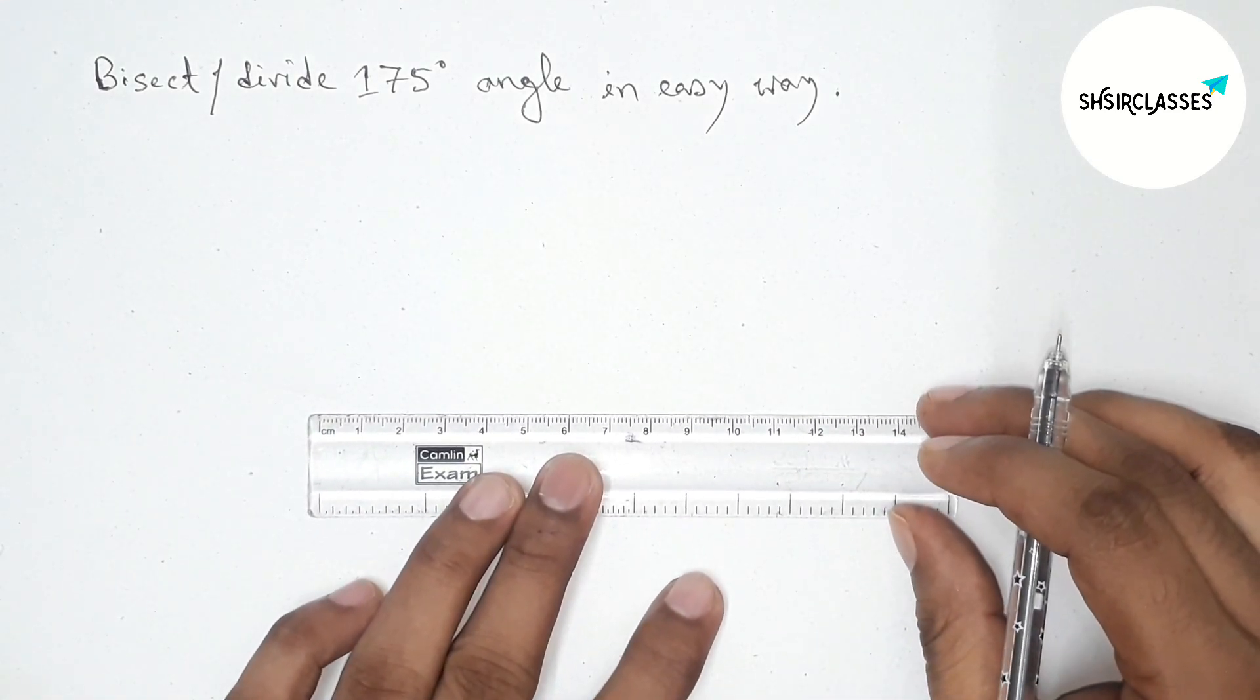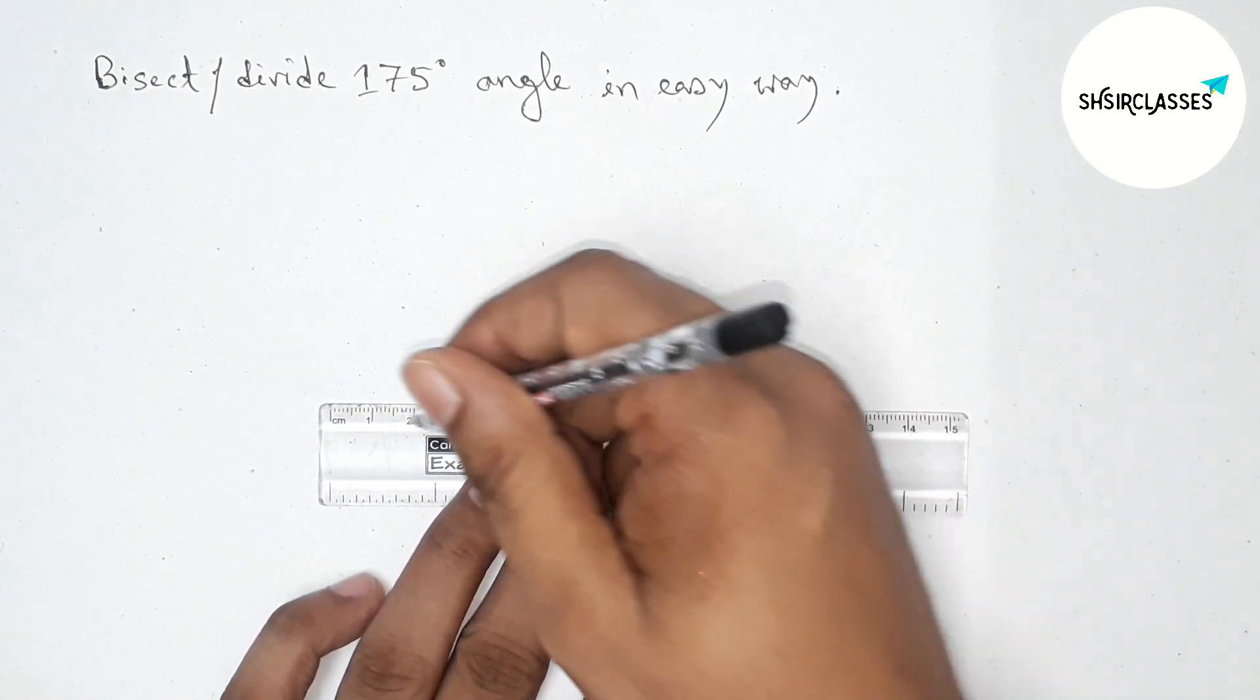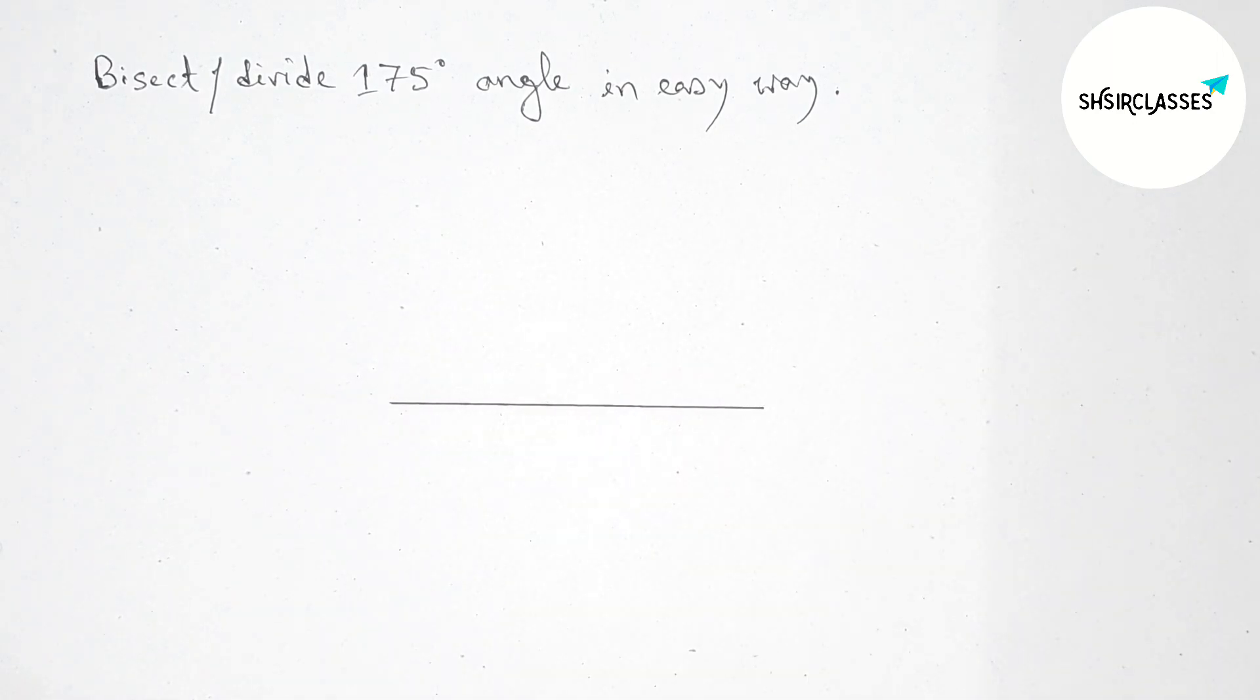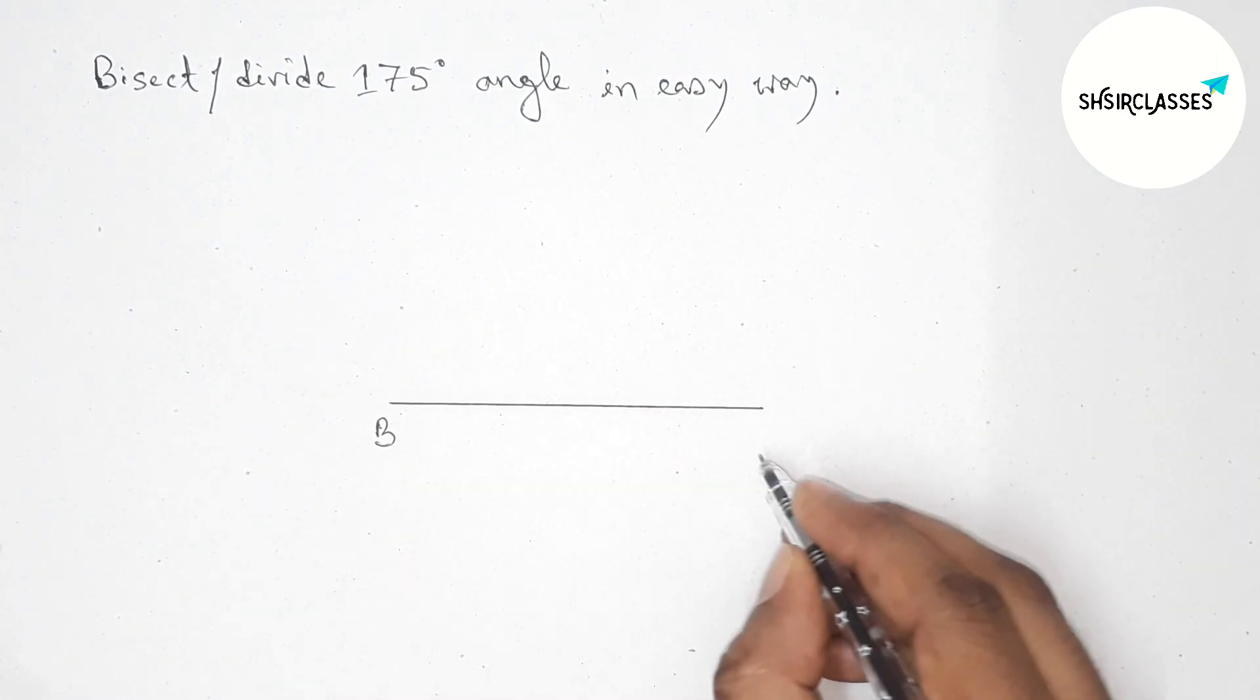First of all, let us draw here a line segment of any length. Now taking here point B and here C.